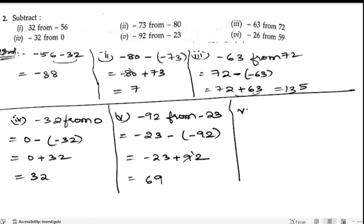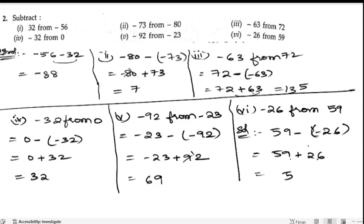Next is sixth bit: -26 from 59. So let us write down 59 first. 59 minus minus of -26. So here, 59 minus into minus is plus 26. So 9 plus 6 is 15, 5 plus 3 is 8, so it is 85.